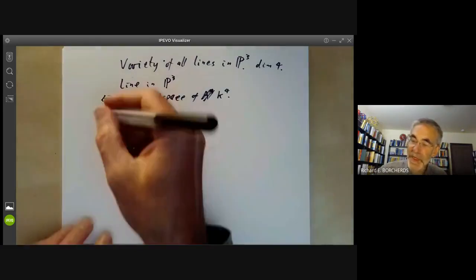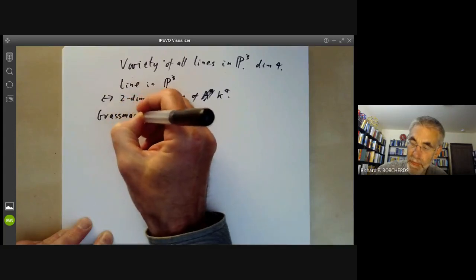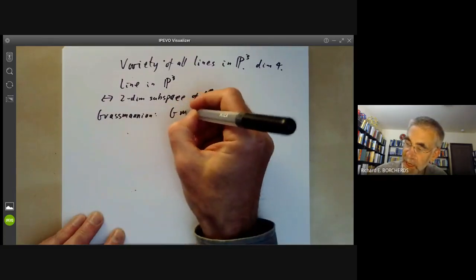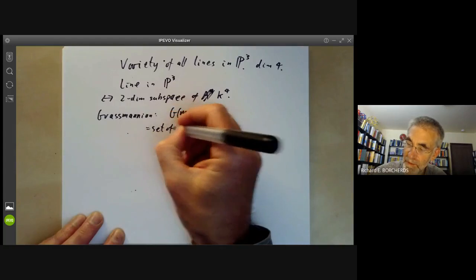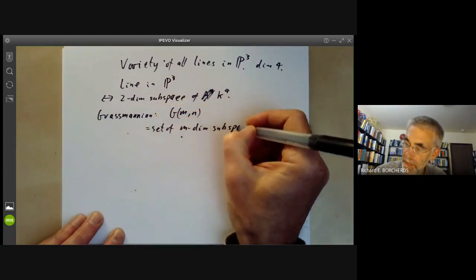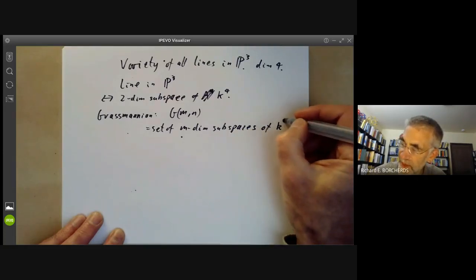This is a special case of a Grassmannian. A general Grassmannian, GMN, can be thought of as the set of M-dimensional subspaces of the vector space K to the (M+N).